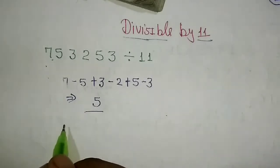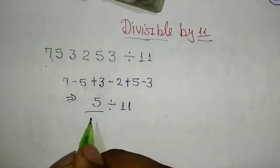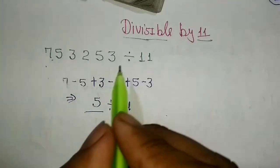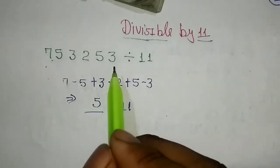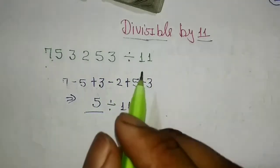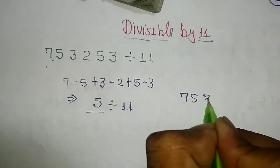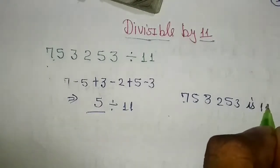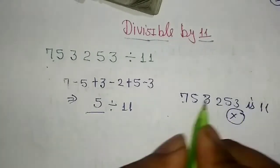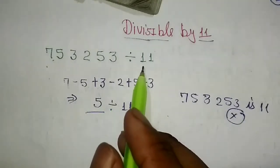In the result, if this alternative sum is not divisible by 11, then the original number is not divisible by 11 as well. Since 5 is not divisible by 11, so we know the original number is not divisible by 11.